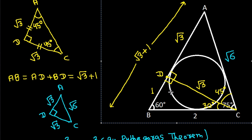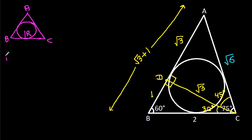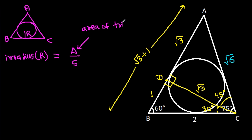In any triangle ABC, the inradius R equals Δ/S, where Δ is the area of the triangle and S is the semi-perimeter of the triangle.